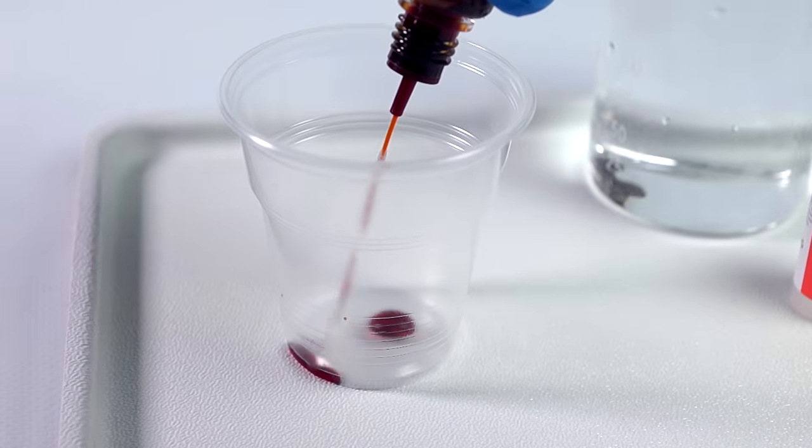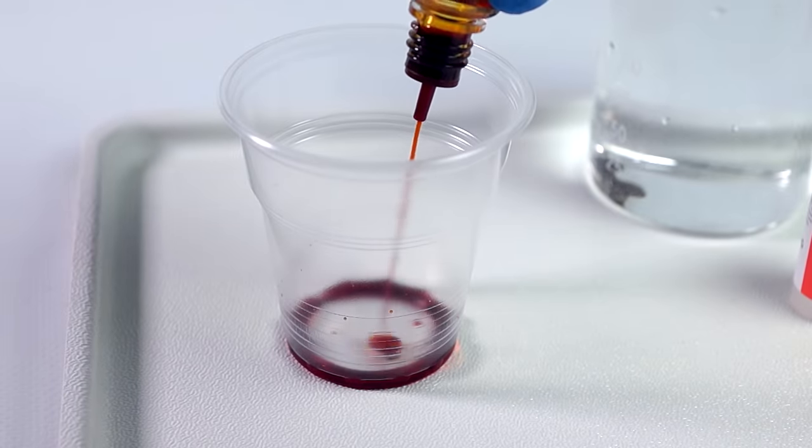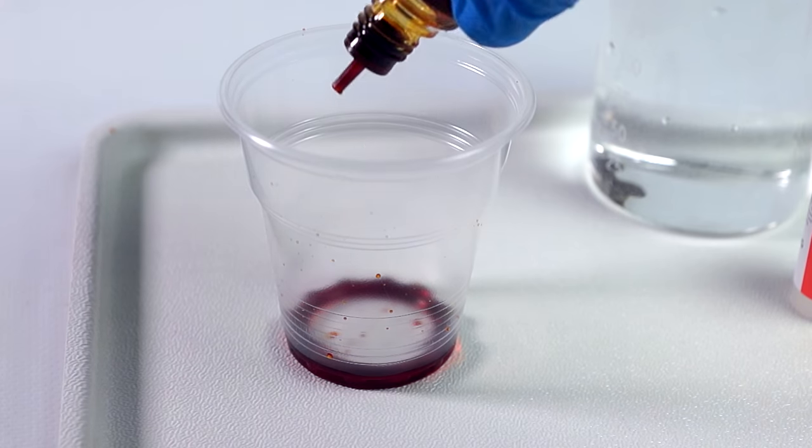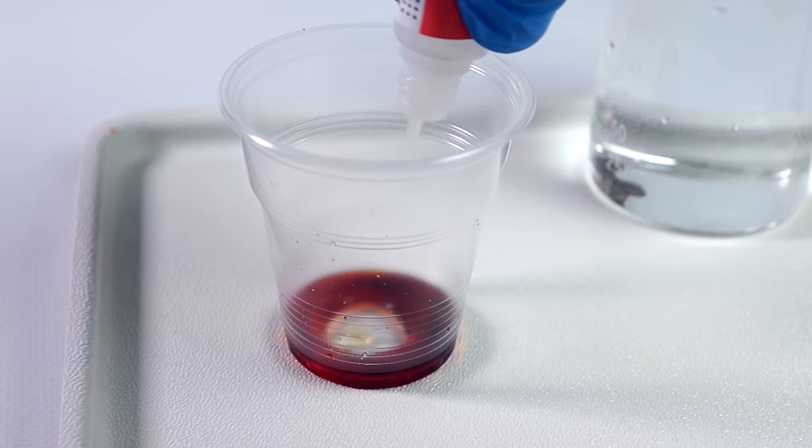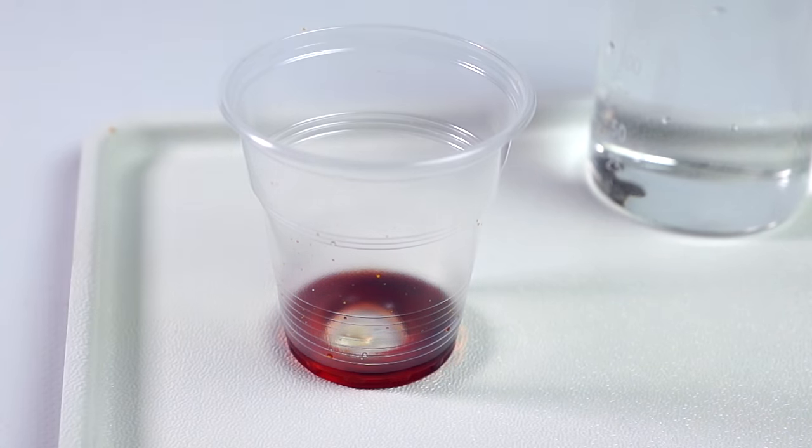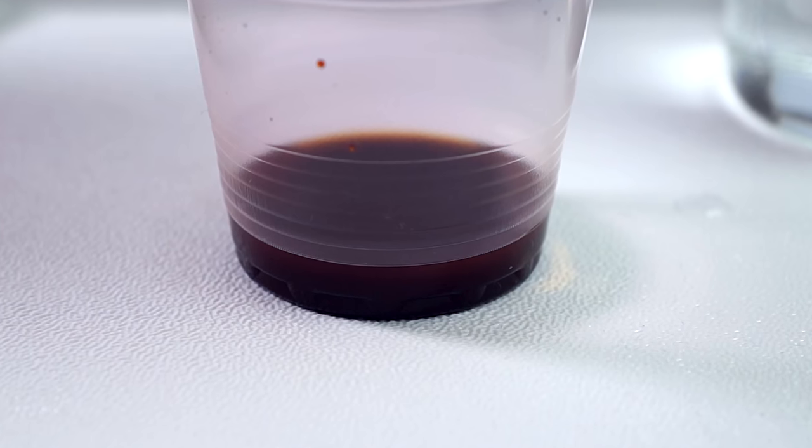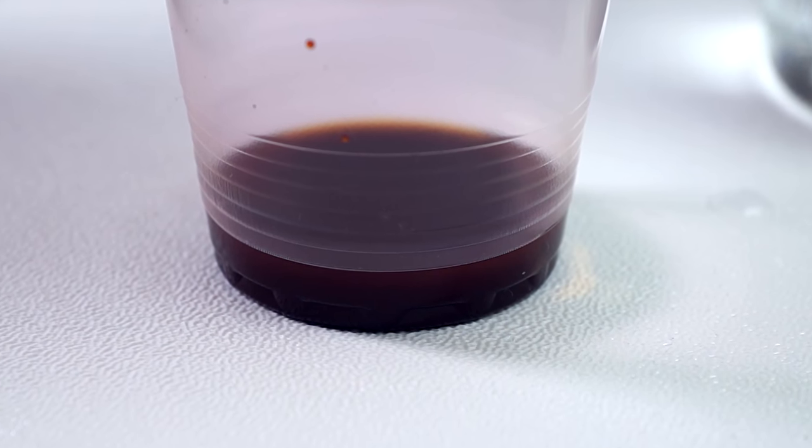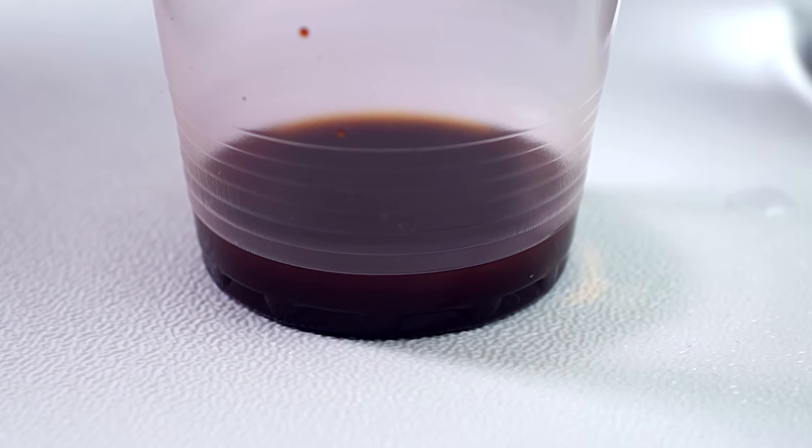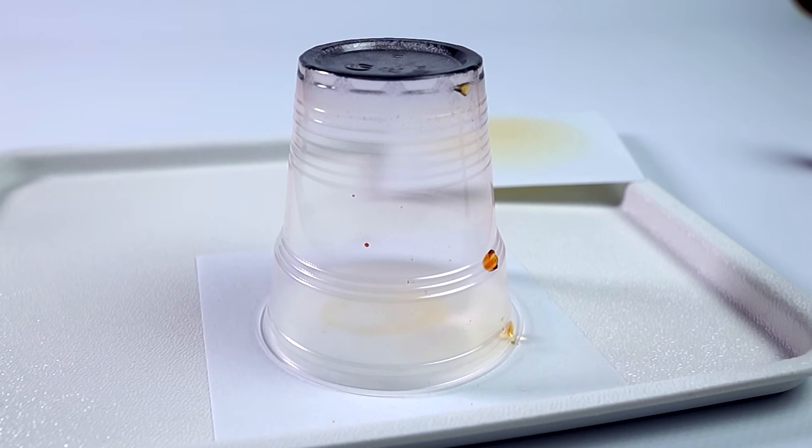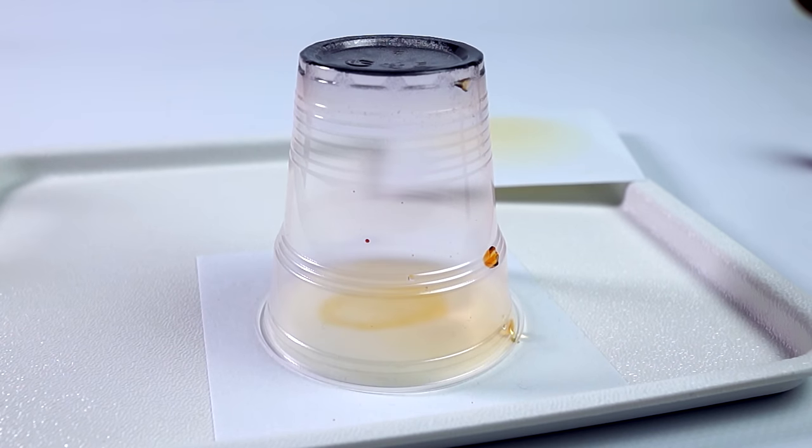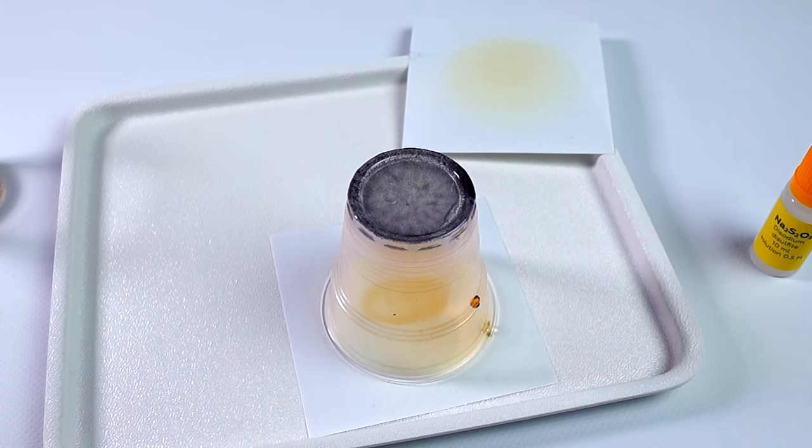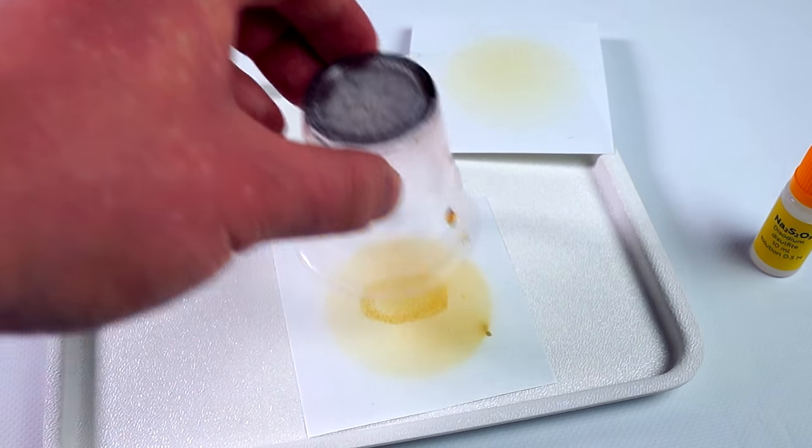Iodine's property to easily vaporize can be applied in forensic science. If you take some iodine tincture and add two teaspoons of 3% hydrogen peroxide and a quarter spoon of citric acid to it, in some time there will be released a small amount of elemental iodine. If you carefully turn the glass upside down and put it on a sheet of paper with a fingerprint, in some time you'll see the fingerprint. That's because iodine dissolves well in fat, which we leave with our fingerprints.